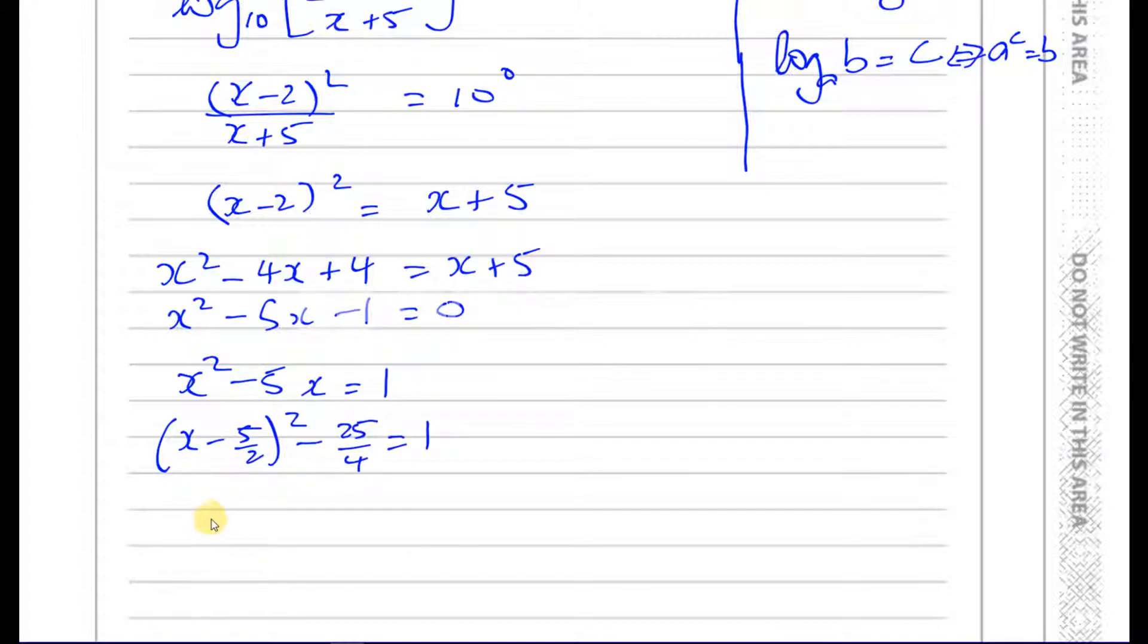Add 25/4 to both sides. So I have (x minus 5/2) squared is equal to 1 plus, so that's 29/4, because that's 4/4 plus 25/4, 29/4. So (x minus 5/2) is going to be plus or minus the square root of 29 over 2.